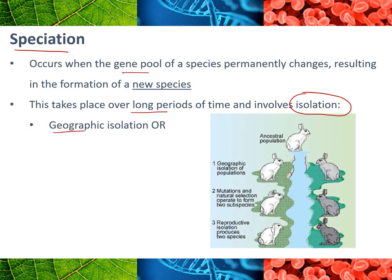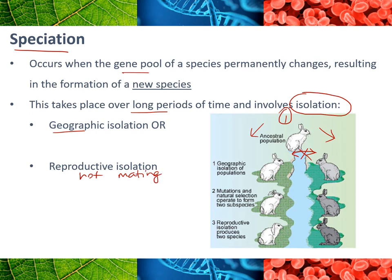That isolation could be geographic. For example, one species of rabbit ended up on one side of a river and some on the other side, so they were geographically isolated and couldn't breed with each other. Isolation can also be reproductive — maybe these populations can mix but for whatever reason they're not mating, perhaps because their mating calls or rituals become different, or they become active at different parts of the day.